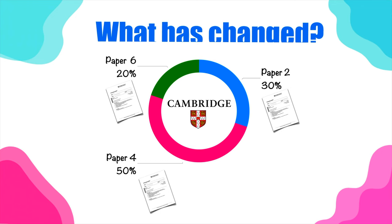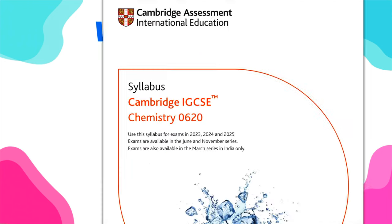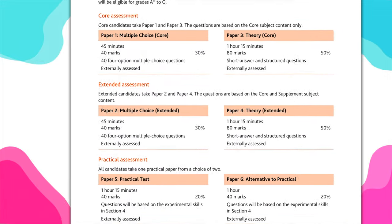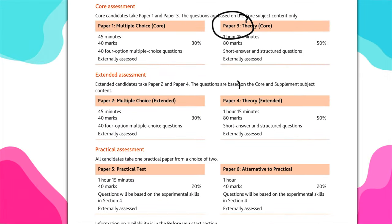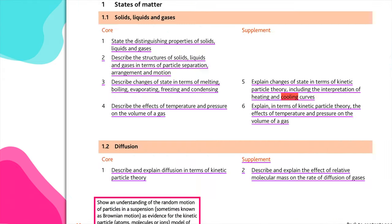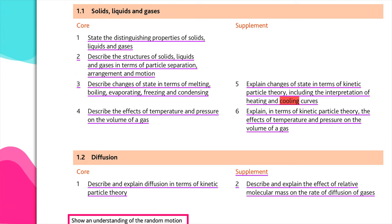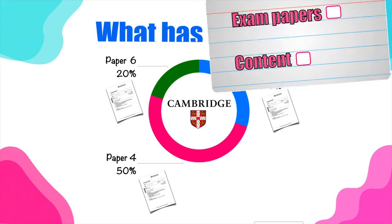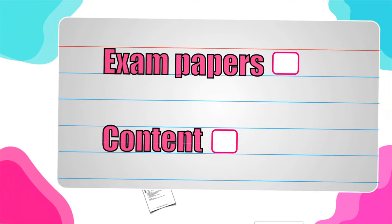If you look at the Cambridge publication for the new syllabus, you would notice that the exam structure is still the same — the same structure, the same type of exam paper for core and extended. But if you look deeply into the content, you would notice there are many, many changes. So you have to make sure you have the right material that has been updated for the new syllabus, and that you're learning the new contents for the 2023 exams.